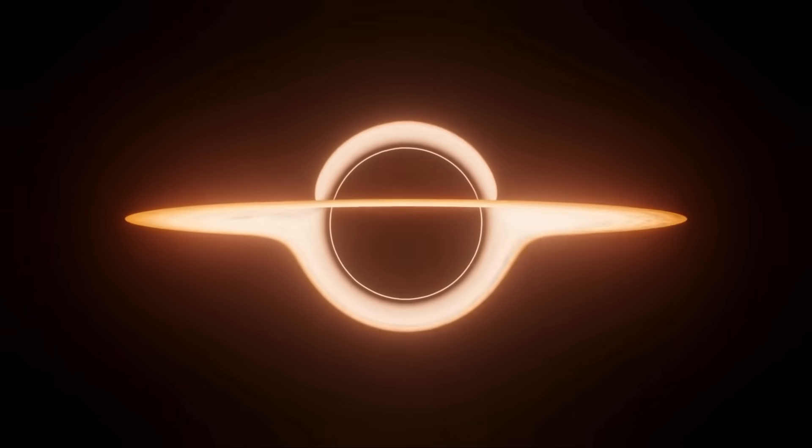To understand this, we need to look at the physics of black holes. When matter collapses under gravity to form a black hole, it creates an event horizon, a boundary beyond which nothing can escape, not even light. Anything that crosses this boundary is forever lost to an outside observer.